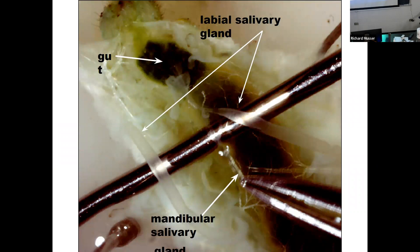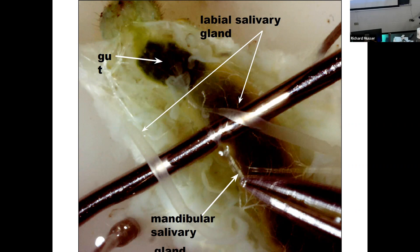Here's what the salivary glands look like in a dissected caterpillar. You can see the gut and mid-gut. The labial salivary glands are really huge structures on the sides, and the mandibular salivary glands are much smaller in the middle. If you scaled it to a human, the salivary glands would go from your neck down to your knees. The first thing I would do is dissect the salivary glands, grind them up, and paint them onto leaves.